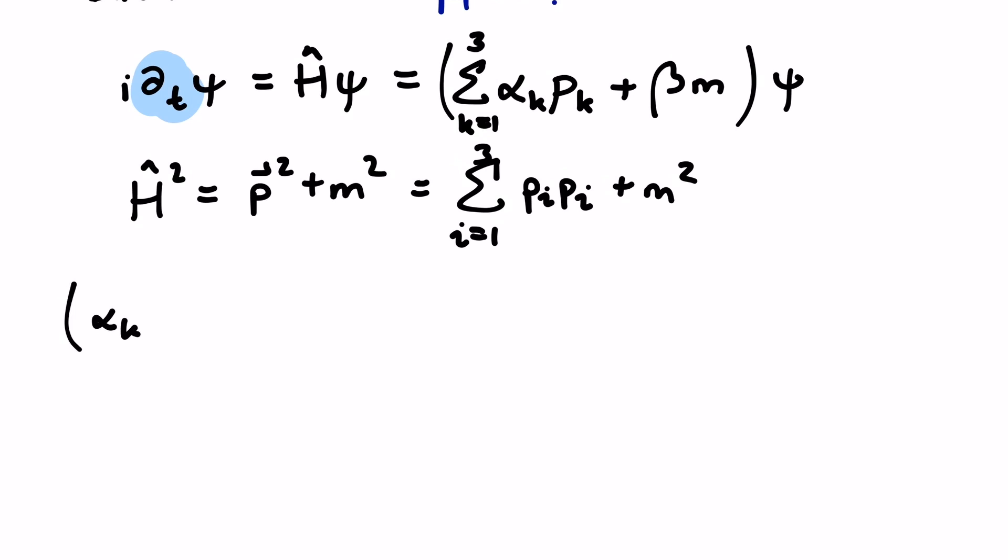Let's find out what this condition implies. We have alpha k pk plus beta m times alpha j pj plus beta m. And this should be pi pi plus m squared. Notice two things.